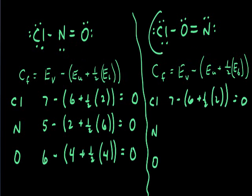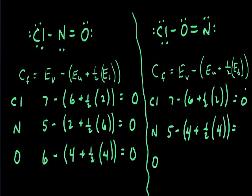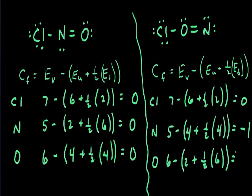Calculating for chlorine in the structure on the right, we get a value of zero for our formal charge. Calculating for nitrogen in the alternative structure, we get a formal charge of negative one. Calculating formal charge for our oxygen in this structure, we get a value of positive one for our formal charge.